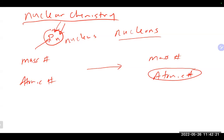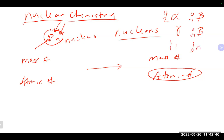The missing piece may not be an element—it could be a particle. We talked about several types: alpha particles, beta particles, gamma (which has basically no mass), positrons (which are positive electrons), neutrons, and protons. These are different types of particles we come across a lot in nuclear chemistry.